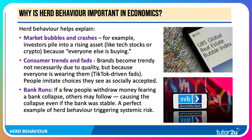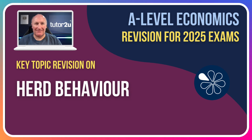We also see herd behaviour in bank runs. If a few people start withdrawing money, fearing a bank collapse, others may follow, causing a liquidity crisis even if the bank was stable — a perfect example of herd behaviour triggering systemic risk. Please be aware of herd behaviour as you study financial economics and understand how it links to information failure and behavioural economics.